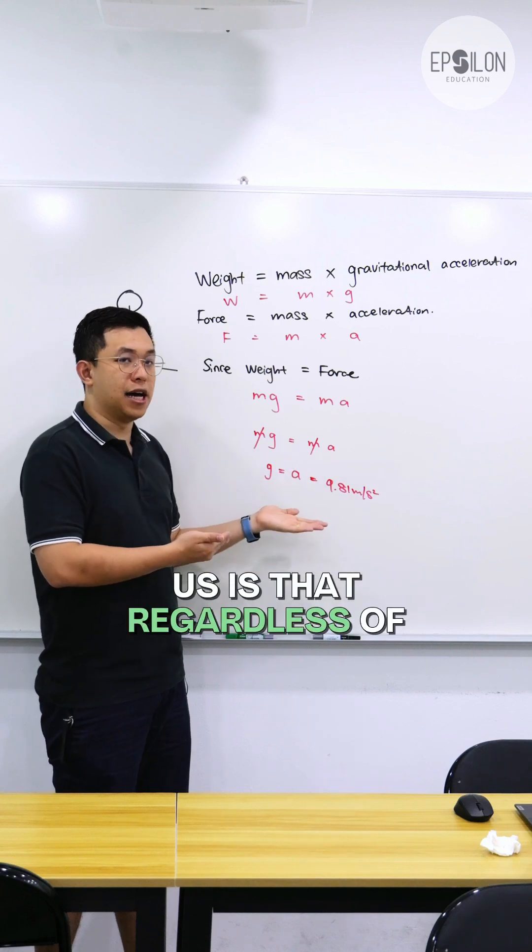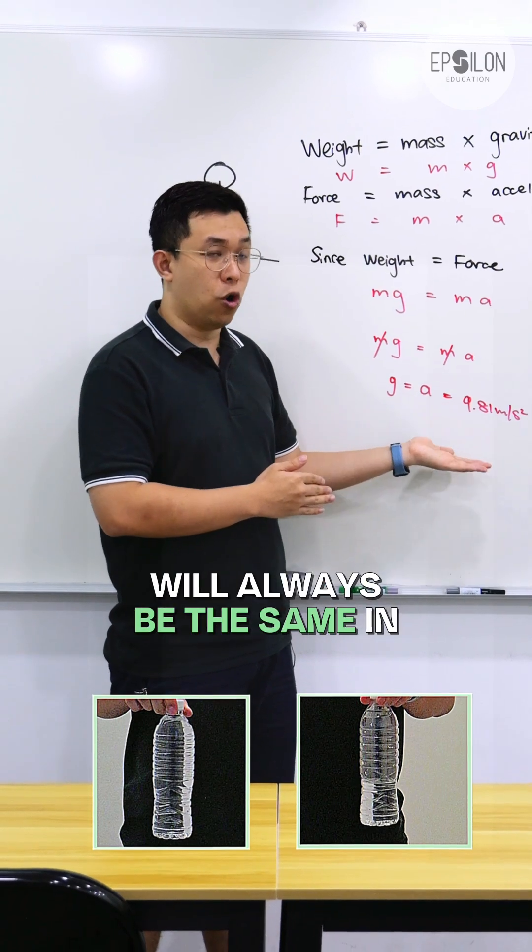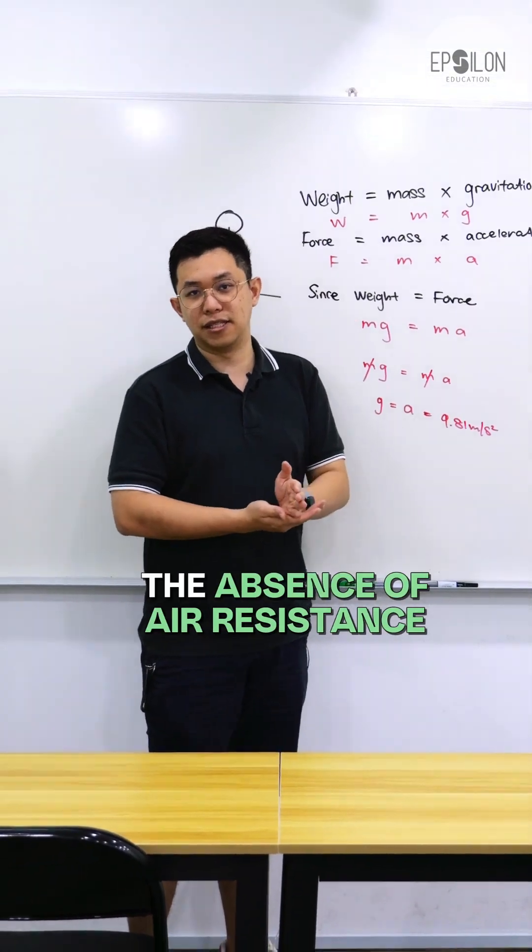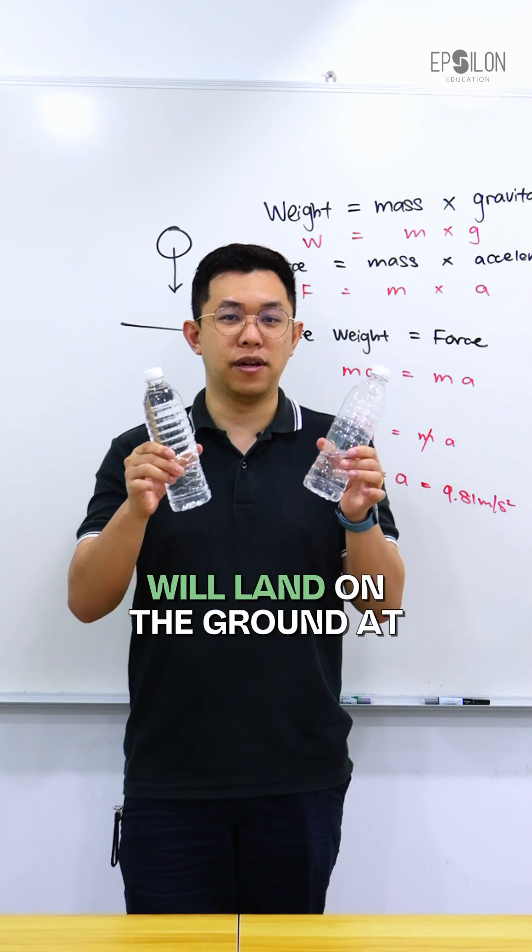So what is this telling us? Regardless of your mass, your acceleration will always be the same in the absence of air resistance. That's why when we drop both these bottles, they will land on the ground at the same time.